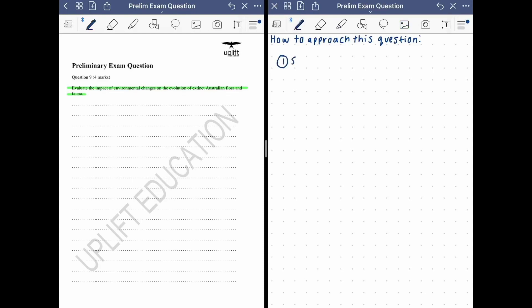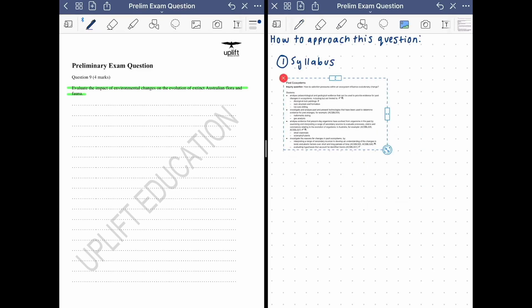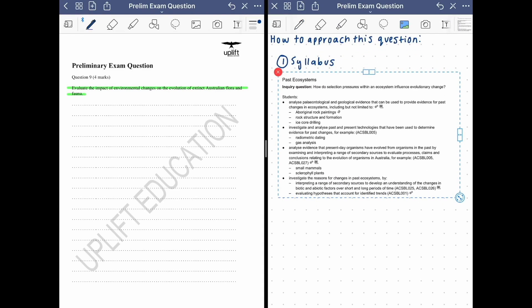Step number one is to have an idea of exactly where the question comes from in the syllabus. That way you'll be able to include specific content from that area and then that will help you in getting full marks. So I'll just pull up where this comes from in the syllabus. This question is specifically from module four. Those of you who have done year 11 biology should know module four is called ecosystem dynamics.